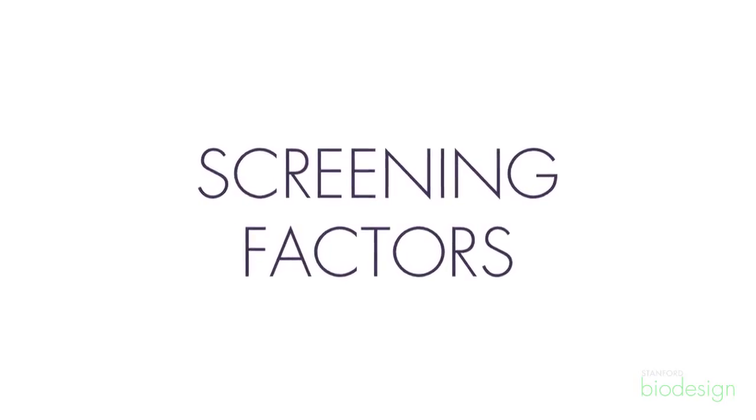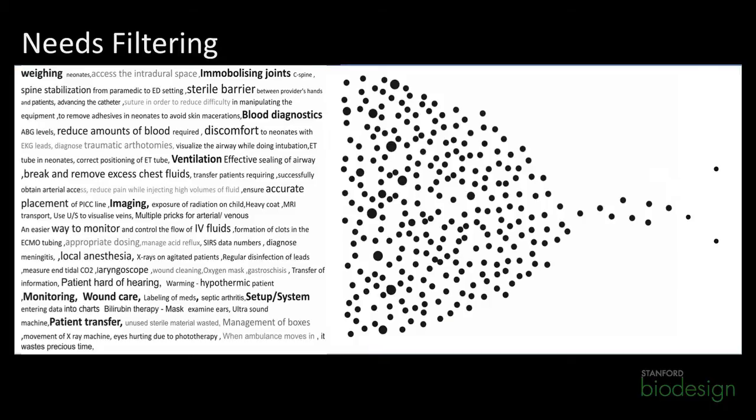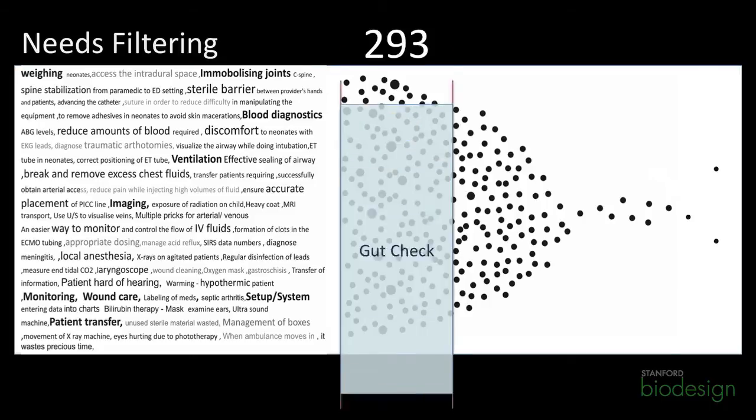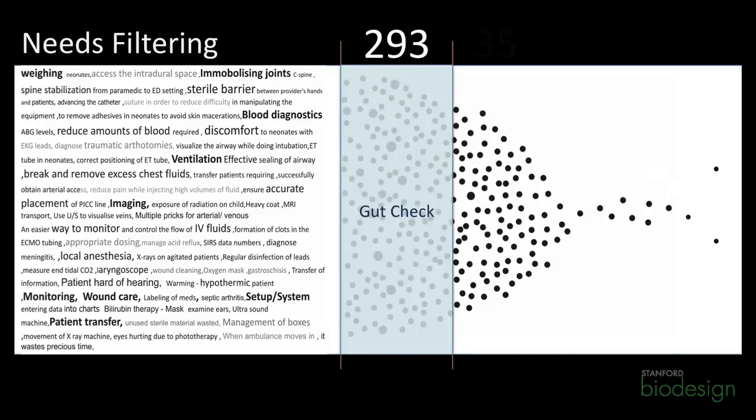You don't go from 100-odd needs to a top four in one go — you do it step by step. The first filter we applied was a subjective one: what needs do we want to work on as a team? What fits our team charter? Value was considered very early. If it was not going to create value for the healthcare system, it did not make it to our final list of needs to brainstorm.